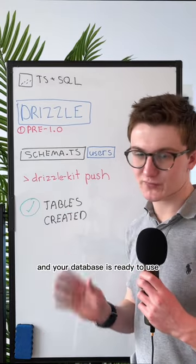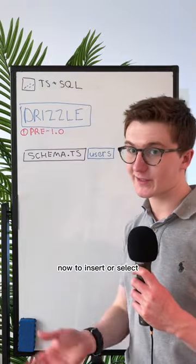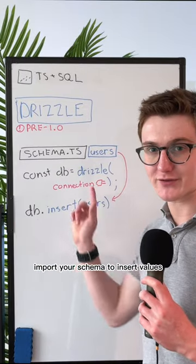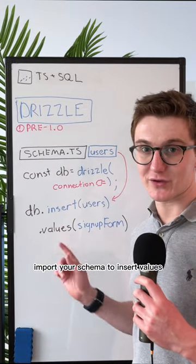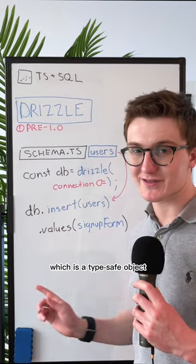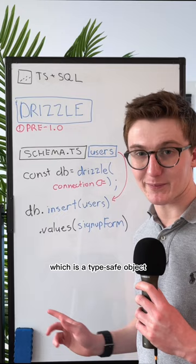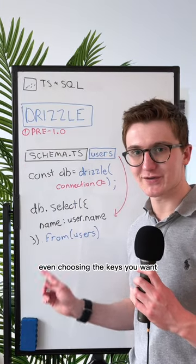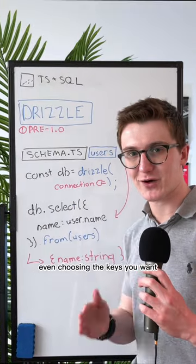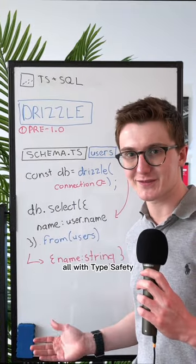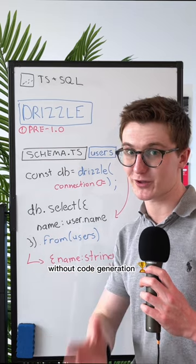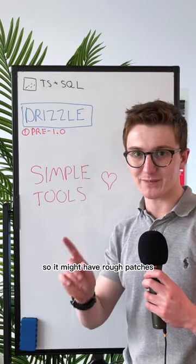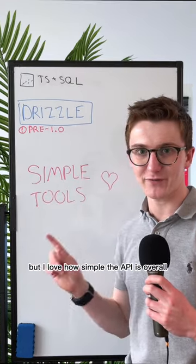Once your database is ready, to insert or select you can make a connection, import your schema, insert values as a type-safe object, and select those values back out — even choosing the keys you want — all with type safety and without code generation. It's early so it might have rough patches, but I love how simple the API is overall.